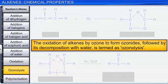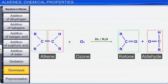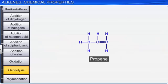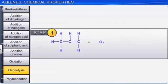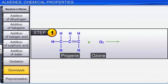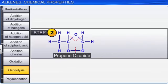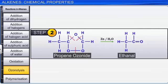Ozonolysis is useful in locating the position of the double bond in an unsaturated molecule. Let us look at another example — the ozonolysis of propene. First, propene and ozone react to form propene ozonide. The propene ozonide on further hydrolysis in the presence of zinc undergoes cleavage to form ethanal and methanal. The products formed help us to determine the position of the double bond in propene.